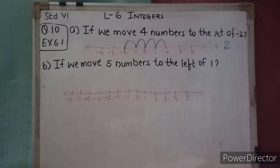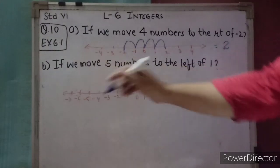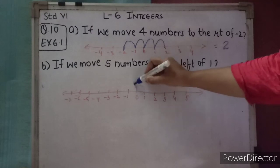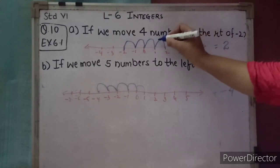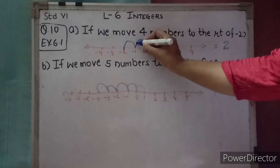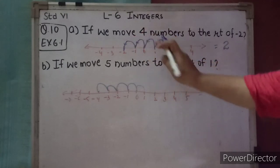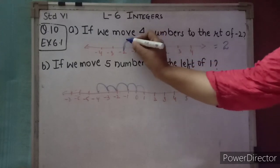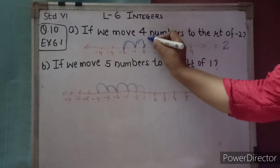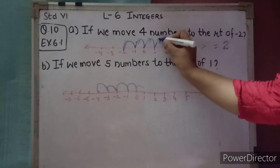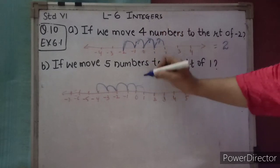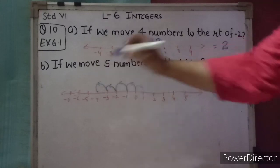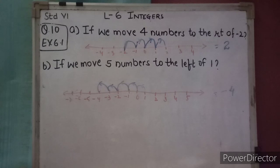Which number will we reach if we move 5 numbers to the left of 1? We start at 1 and move 5 steps to the left: 1, 2, 3, 4, 5. We will reach at minus 4. When moving right we draw the arrow in the right direction. This is all about exercise 6.1.